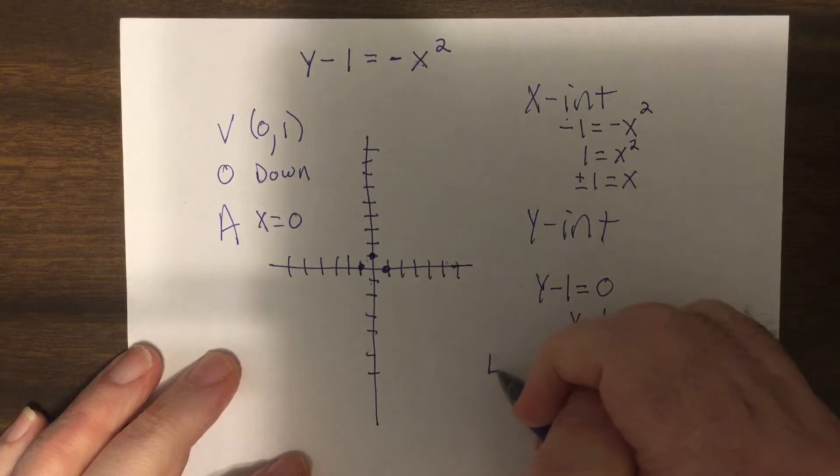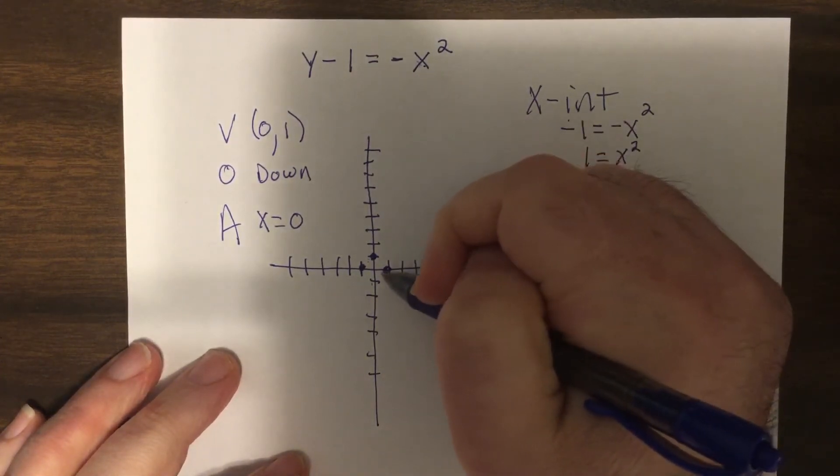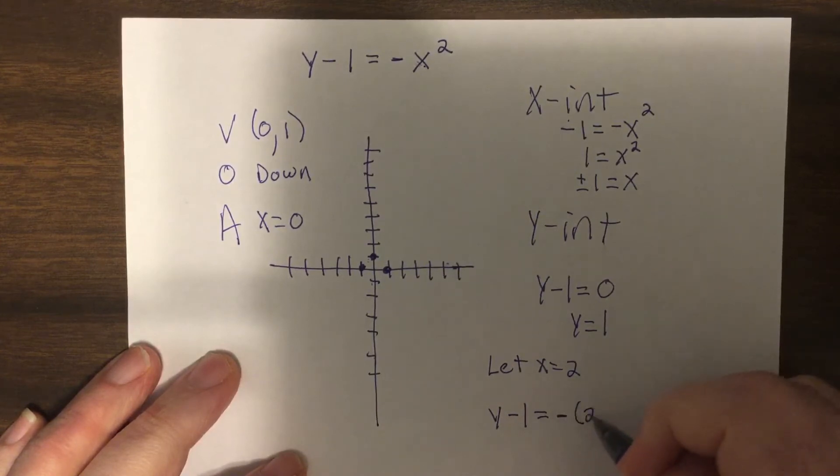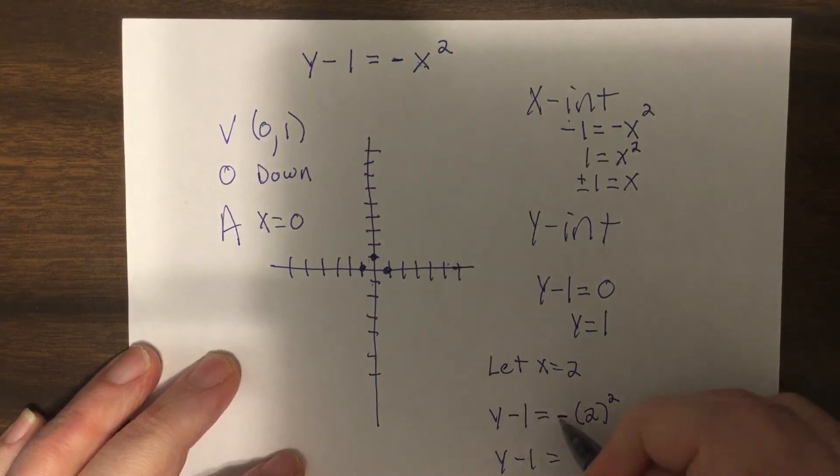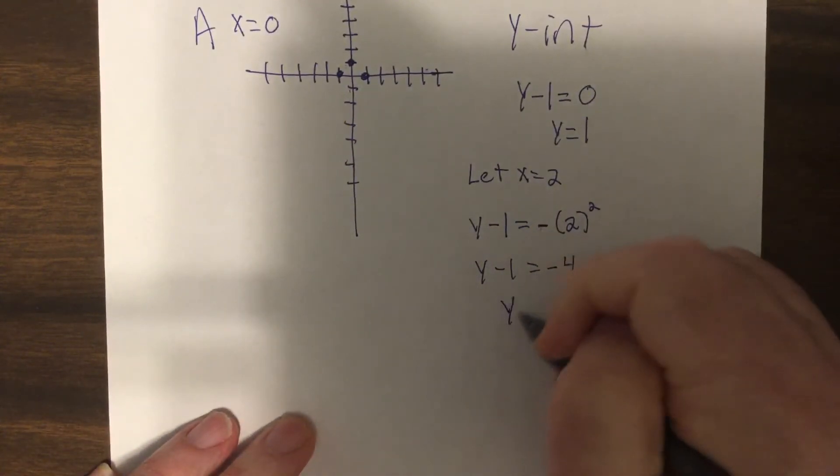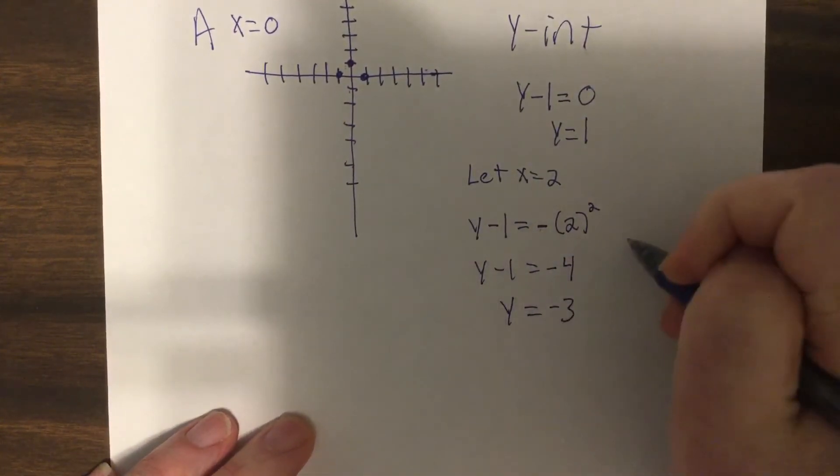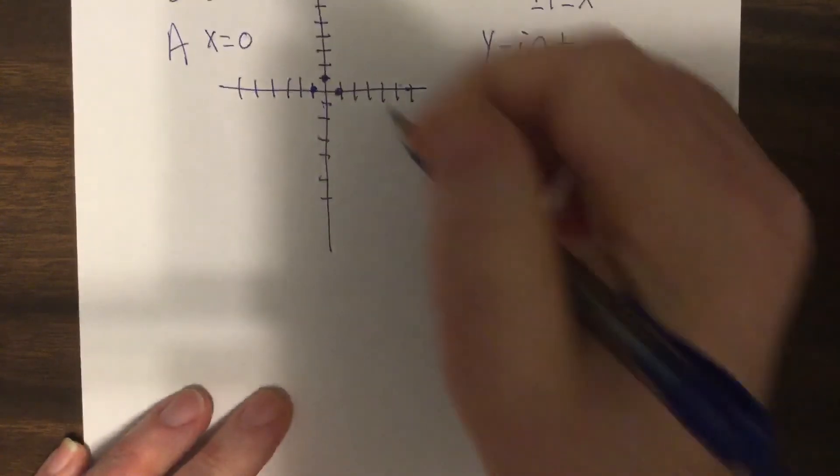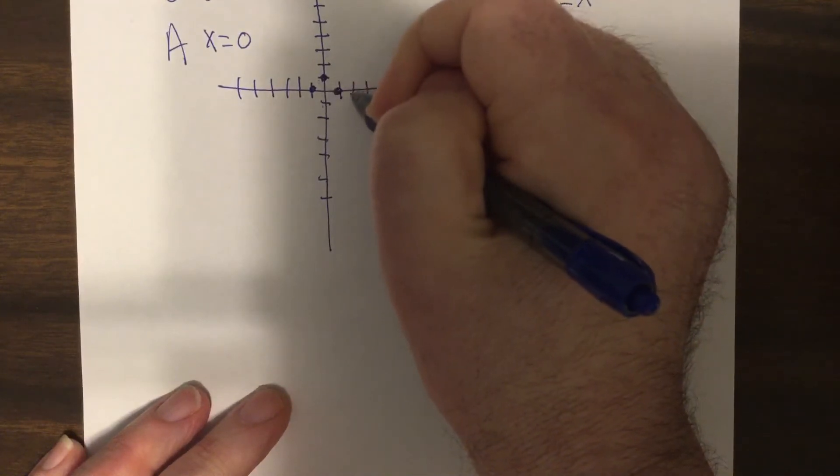So I'm going to let X equal two because that's a nice number, but it's still close to the vertex. So I'd have Y minus one equals negative two squared. Two squared is four. So it'd be Y minus one equals the opposite of four. So add one. So Y equals negative three. So it'd be two negative three is my point. So I'm going to put a dot at two negative three.